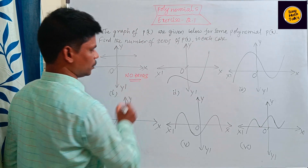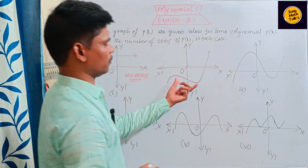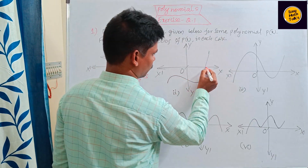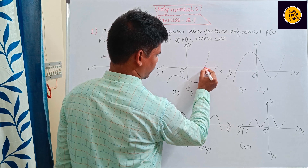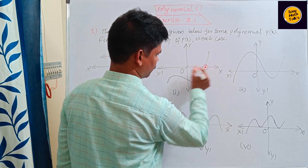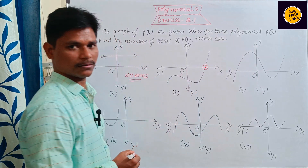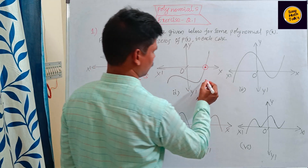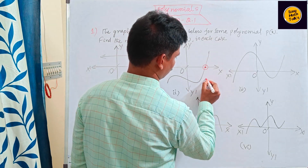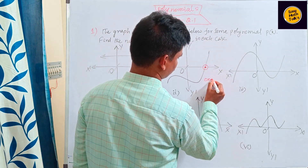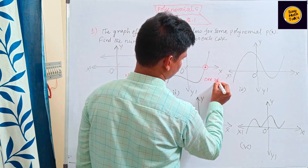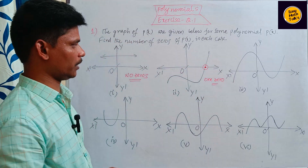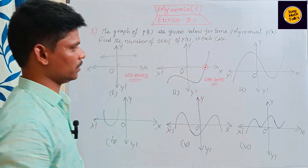See this one. This line touches the x-axis at one point, meaning x squared has one point. Here there is only one zero. The number of zeros is one.